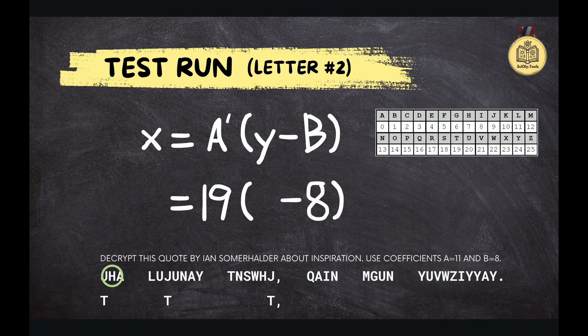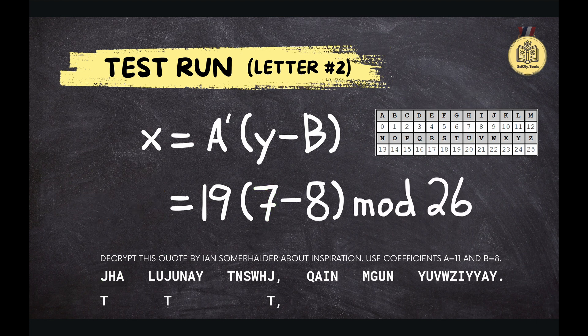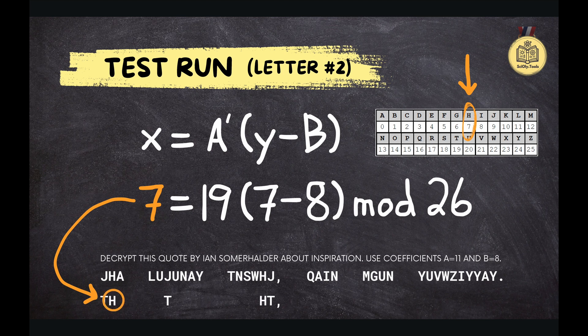Okay, let's try the next letter, H. Our A inverse and B stay the same, and H is represented by the number 7. Plugging those values into our formula, we get X equals 19 times the quantity 7 minus 8. That gives us negative 19. But wait a minute. Our table only goes from 0 to 25. What do we do when our answer is outside that range? We add 26, the total number of letters in the alphabet, to bring it back within our table's range. So negative 19 plus 26 gives us 7. And looking back at our letter table, 7 corresponds to H. So in this case, H actually decodes to itself. And that's another interesting thing about the affine cipher - sometimes a letter might decode to itself.